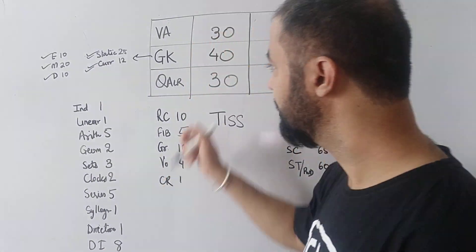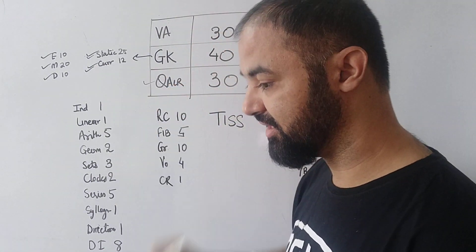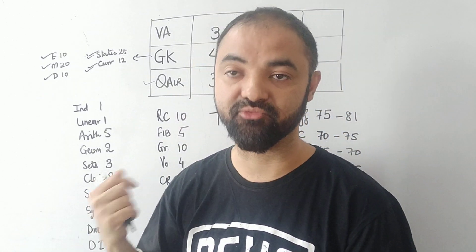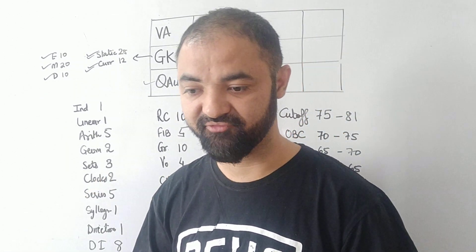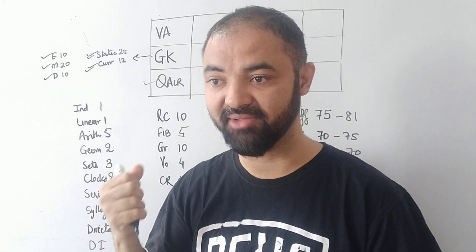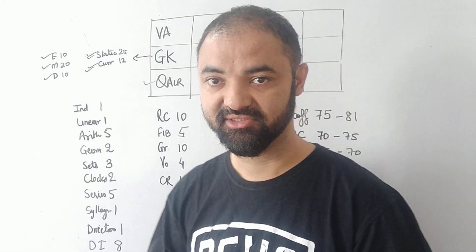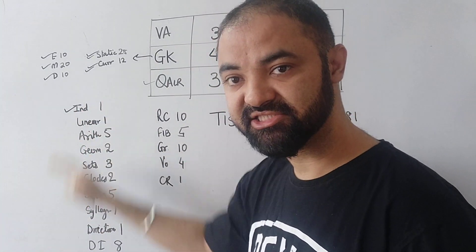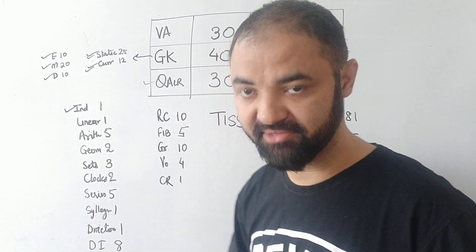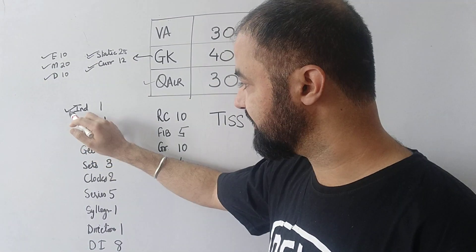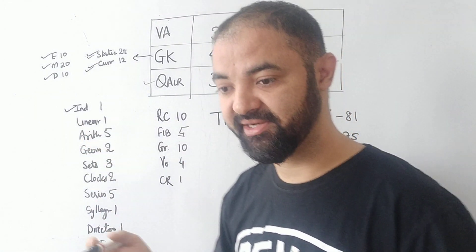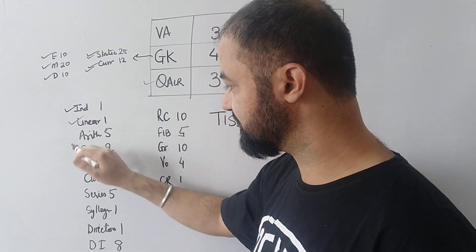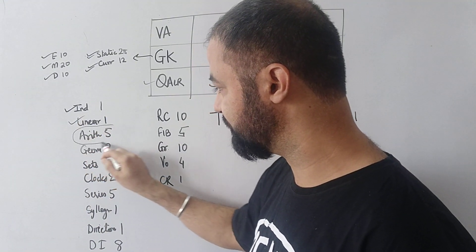Moving to the quant section - if you've given CAT, SNAP, or other exams, you'll find quant to be very easy. In fact, if you've given CAT, you'll feel like your IQ is so high. These are the chapters: indices one question, linear equations one question, arithmetic five questions. That's the main thing you have to focus on.